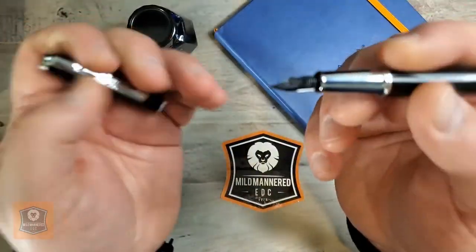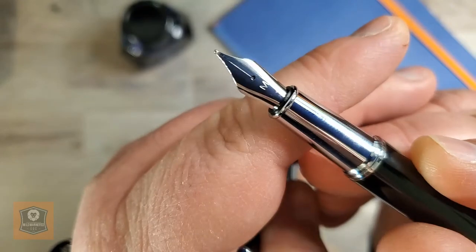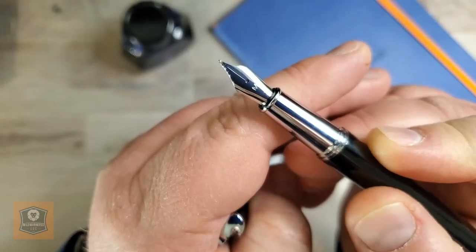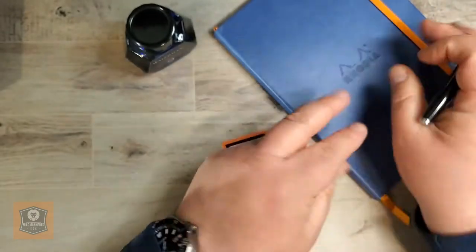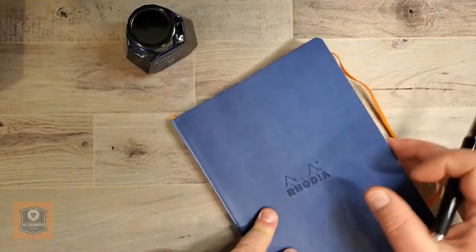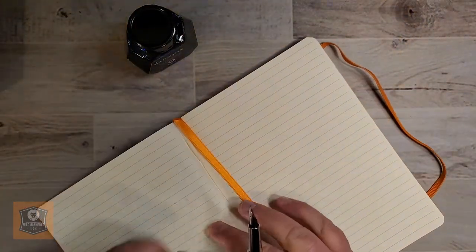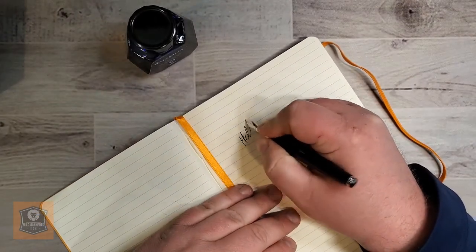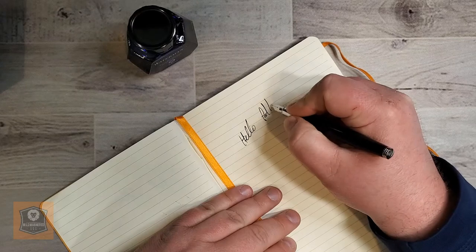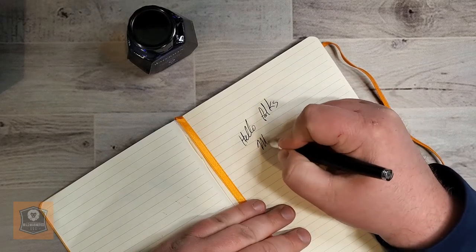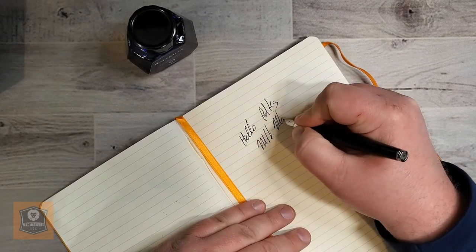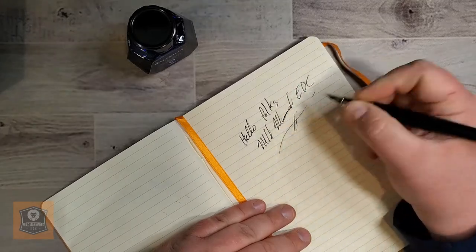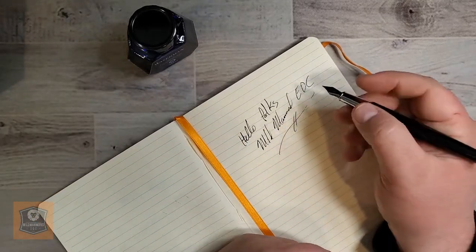This particular one comes with a no-nonsense nib. You can see by the M, it is a medium nib. And I think it actually writes pretty darn well, all things considering. It's actually a pretty smooth writer.